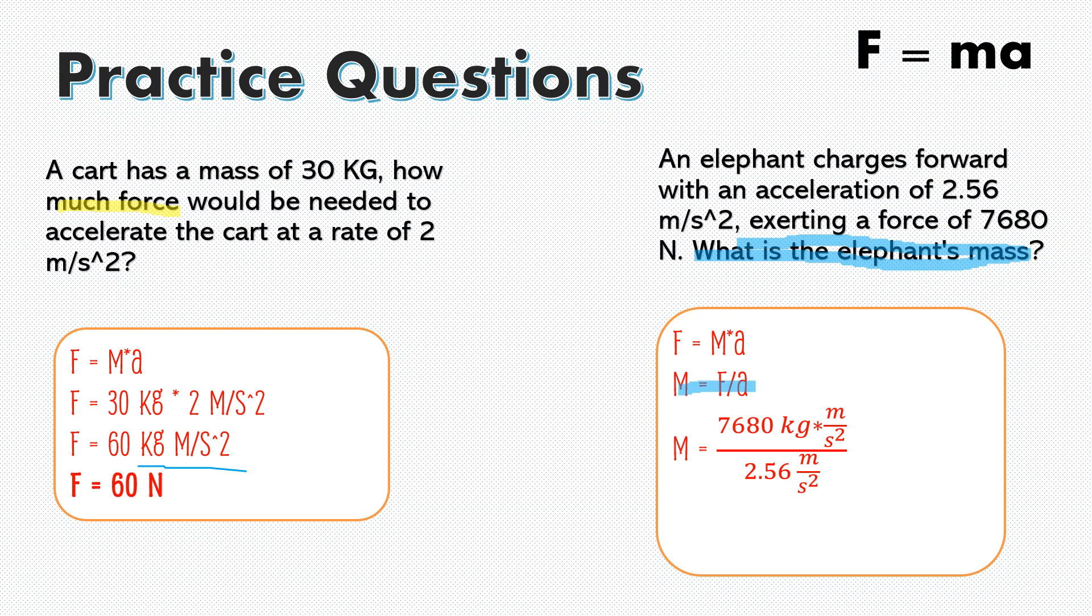Now the next thing we're going to do is just substitute our variables, just like we did in the question before. And I know this looks complicated, but that's just because of the units over here. But what you'll actually notice is that meters per second squared is going to cancel out on the top and bottom. So we're left with 7680 divided by 2.56. And when we actually do the math on this, we get mass is equal to 3000 kilograms, which is pretty accurate for an elephant.